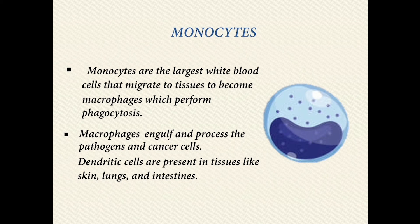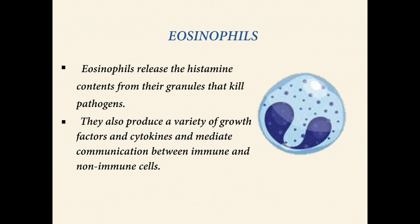Dendritic cells are present in tissues like skin, lungs, and intestines. They present antigens to B and T cells and also secrete cytokines. Eosinophils release histamine contents from their granules to kill pathogens; they also produce a variety of growth factors and cytokines, enabling communication between immune and non-immune cells.